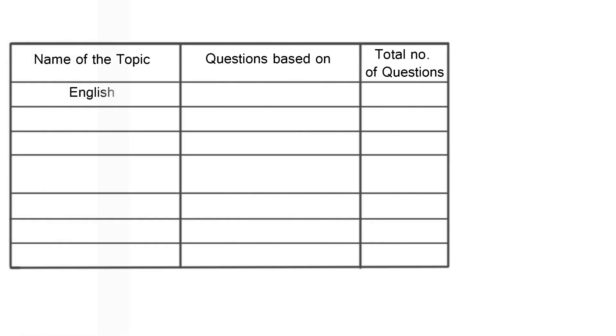Moving on to Part B, this part included different types of subjects. It had a lot of weightage for language, that is English, with about 30 questions from the language section — the comprehension part. There were questions based on paintings by Raja Ravi Varma, where they were judging you for your observation skills and logical reasoning again.